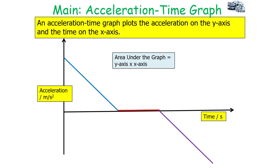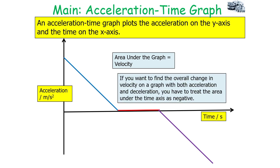A curving line shows the rate of acceleration is changing: a curving line upward shows the rate of acceleration is increasing, and a curving line downward shows it is decreasing. The area under an acceleration-time graph is the acceleration multiplied by the time, which gives us the velocity. So the area under an acceleration-time graph equals the velocity. To find the overall change in velocity on a graph with both acceleration and deceleration, you must treat the area under the time axis as a negative.